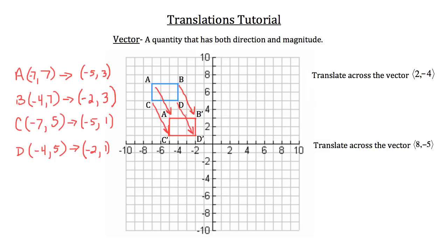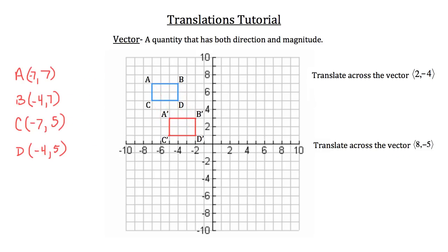Now let's translate the original rectangle ABCD across the vector (8, -5). We're going to do the same kind of math as before. For point A, we add 8 to the x coordinate: -7 plus 8 is positive 1. And we subtract 5 from the y coordinate: 7 minus 5 is 2. So that's the new position of A translated across the vector (8, -5).